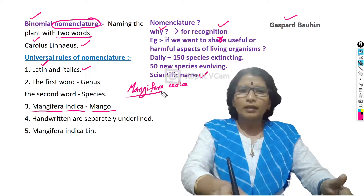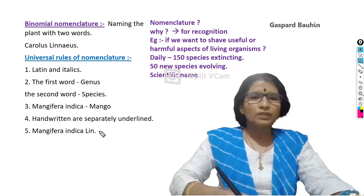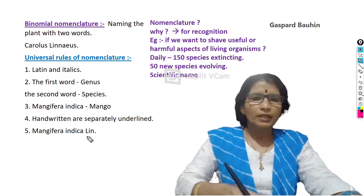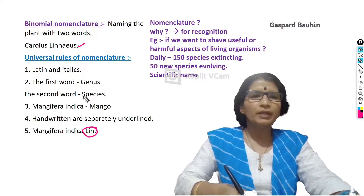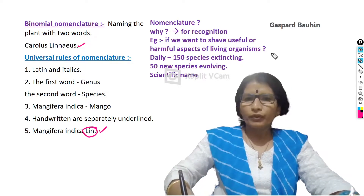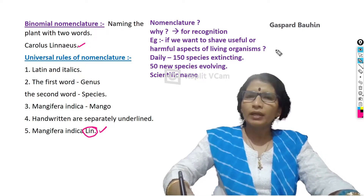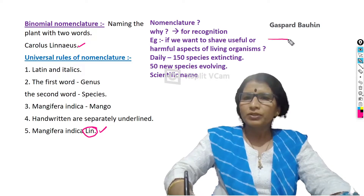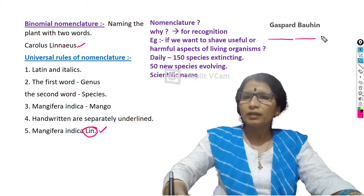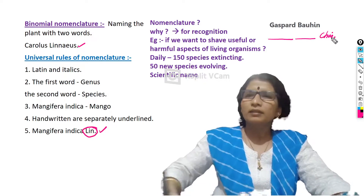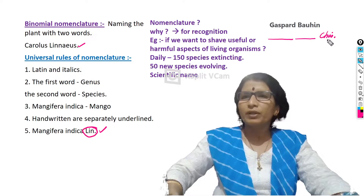Write each word separately with an underline. At the end of the scientific name, you have to write the abbreviated form of the scientist's name — for example, 'Lin' for Linnaeus. That means this scientific name Mangifera indica was given by Carolus Linnaeus. If you give any new scientific name to a newly evolving plant, write first the genus, then the species, and then your name in abbreviated form. For example, if your name is Chaitanya, you write 'Chai' — just like 'Lin' for Linnaeus.